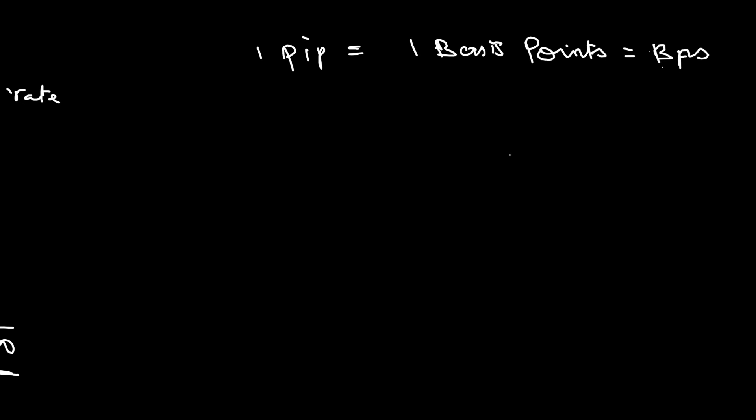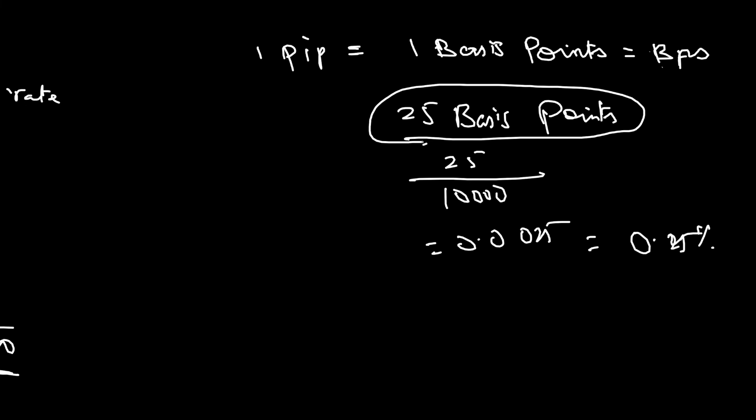We can write if I say, for example, central bank raises 25 basis points. So, 25 basis points means 25 by 10,000. So, 25 by 10,000 is 0.0025. That I can write as 0.25 percentage. So, 25 basis points interest rate central bank hiking is equal to their hiking 0.25 percentage.